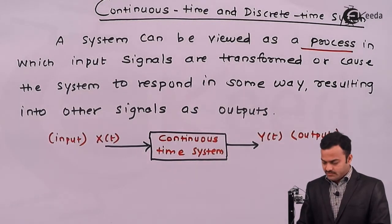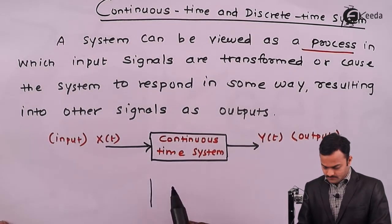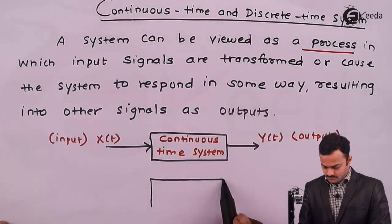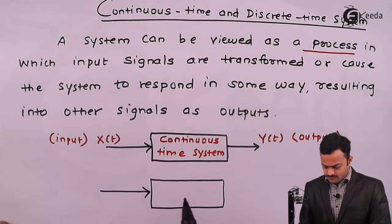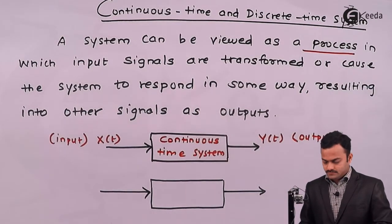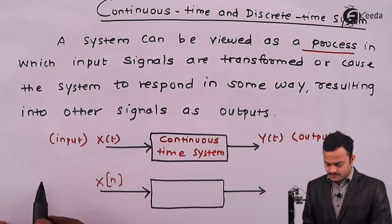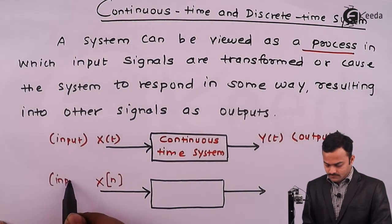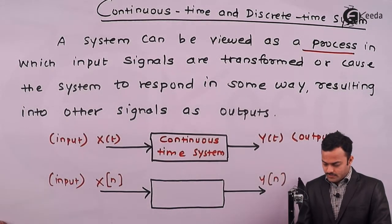The same representation we can have for a discrete time system as well. Here x(n) is the input signal, and we pass it through the discrete time system to get y(n) as the output signal.